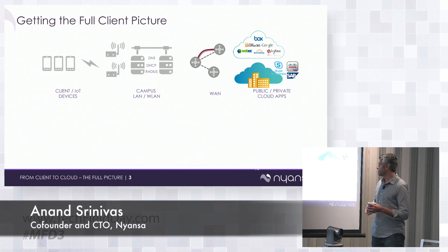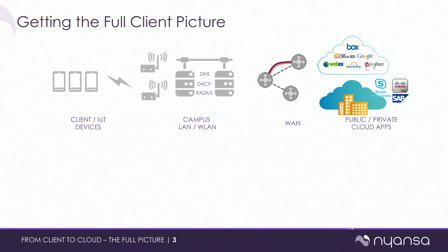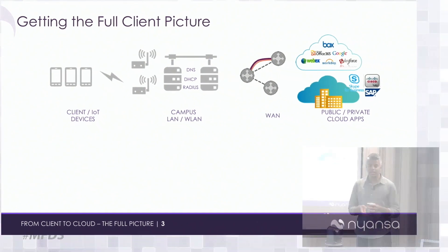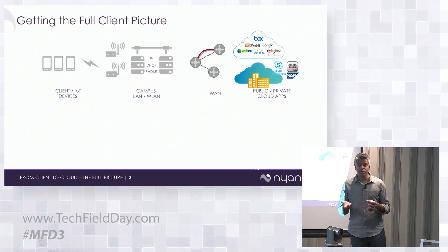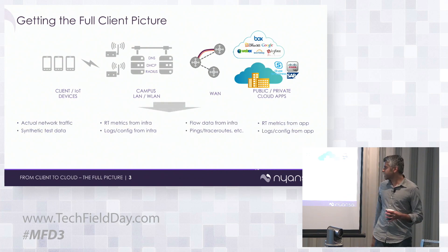This picture could be any enterprise network. When you think about client devices on a network, the whole point is to access applications and access them well. There are several legs along the way, and to really understand the full client experience you need to understand client devices as they connect over wireless, use network services in the campus like DNS, DHCP, RADIUS, ARP, and so on, get onto the LAN, then the WAN, and finally whatever application they're accessing — whether a public app, public cloud, private cloud, or a unified communications peer-to-peer app.